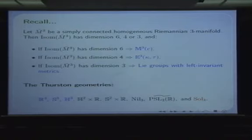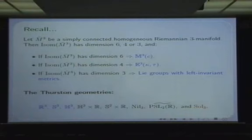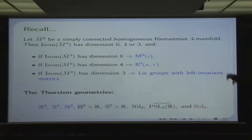If we consider a simply connected homogeneous Riemannian 3-manifold, then one has good control on the dimension of its isometry group. Either the isometry group is six-dimensional, five is impossible, and so you have four or three. You cannot have less than three dimensions in its isometry group. Moreover, you have a classification of the spaces in these conditions.